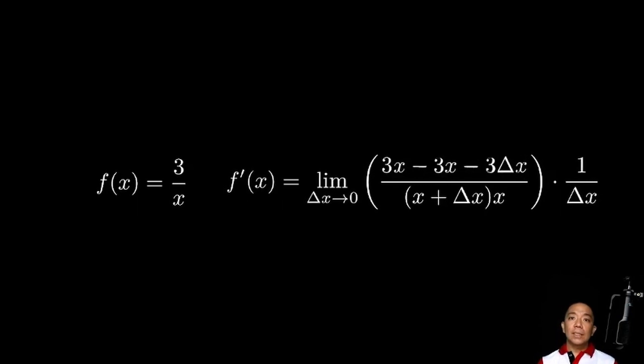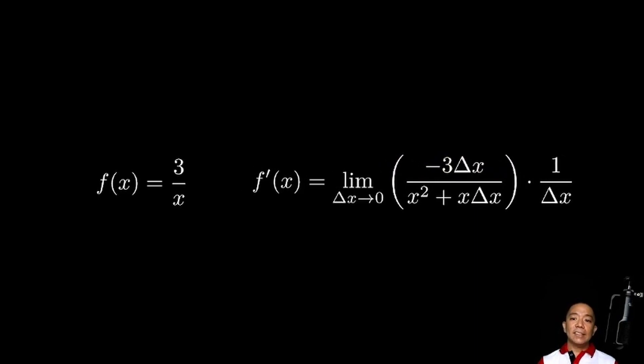Let's distribute yung 3 sa numerator para maging 3x minus 3x minus 3 times delta x. Mas madali natin siyang isimplify mamaya. Let's also do that sa denominator by distributing yung x sa labas para maging x squared plus x times delta x. Now, the numerator can be simplified kasi may 3x tsaka may negative 3x so it will simplify to negative 3 times delta x.